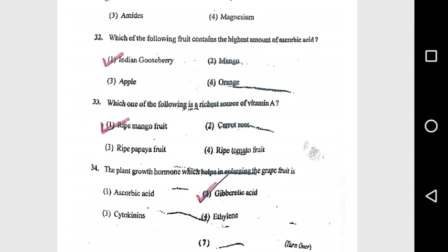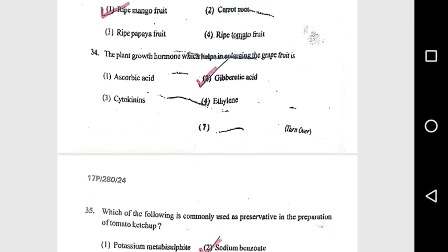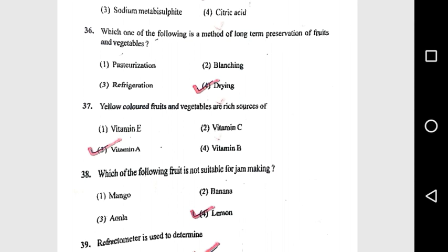Question 33: Which of the following is a richest source of vitamin A? Ripe mango fruit. Question 34: The plant growth hormone which helps in enlarging grapefruit is gibberellic acid. Question 35: Which of the following is commonly used as a preservative in preparation of pomegranate ketchup? Sodium benzoate. Question 36: Which of the following is a method of long-term preservation of fruits and vegetables? Drying.